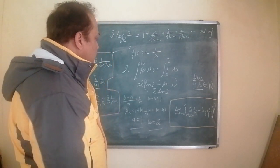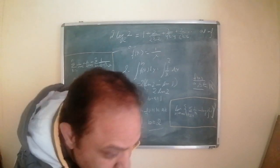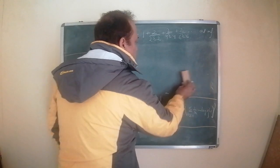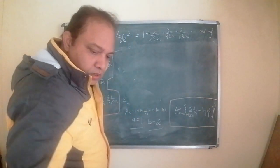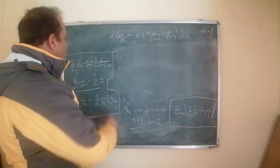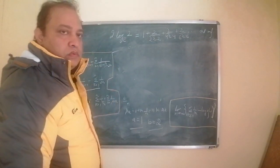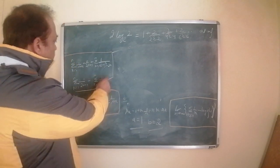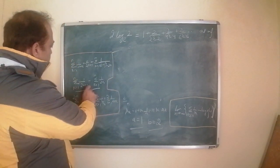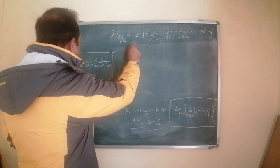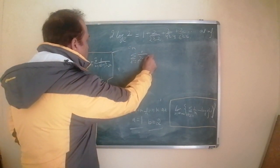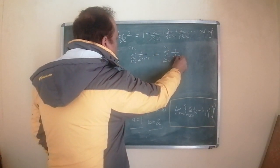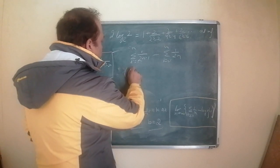Now Ramanujan gives another very elementary proof of this identity, which he derives from results arrived at while proving the first identity of Ramanujan's second chapter of the first notebook. While proving that identity, we had arrived at the result: sum from k equals 1 to n of 1 upon 2k minus 1, minus sum from k equals 1 to n of 1 upon 2n.